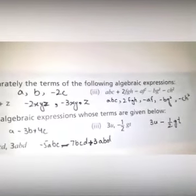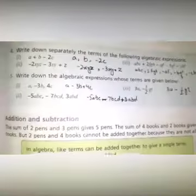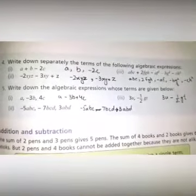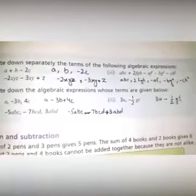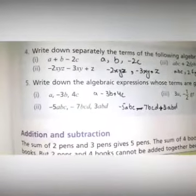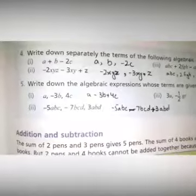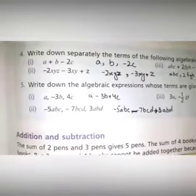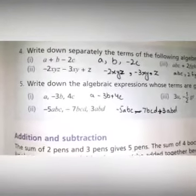Part c. Question number 5: write down the algebraic expressions whose terms are given below. The question has commas between the values. You have to remove the commas between them. You will write the answer: a minus 3b plus 4c.